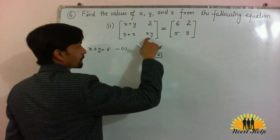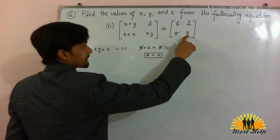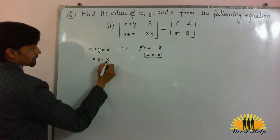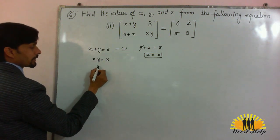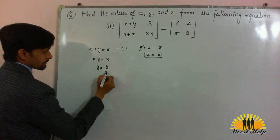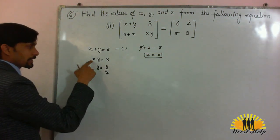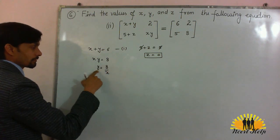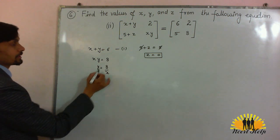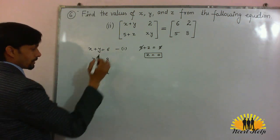Now xy is equal to 8. From here we can calculate y in terms of x. Just take x to that side and y will become 8 divided by x. Now put the value of y in equation number 1.